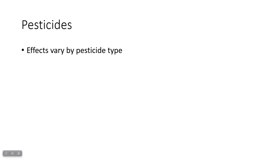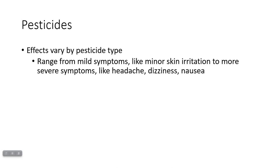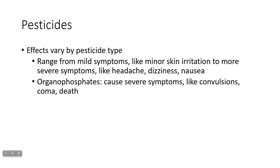Pesticide effects differ depending on which particular pesticide you've been exposed to. Depending on which one and what concentration you're exposed to, you can have mild symptoms like minor skin irritation or something that seems like an allergic reaction, all the way to severe symptoms like headache, dizziness, or nausea. Organophosphates, a particular class of pesticides, are especially dangerous because they can cause severe symptoms like convulsions — uncontrolled muscle movements that look like seizures — as well as coma and death.